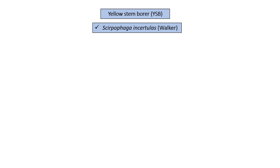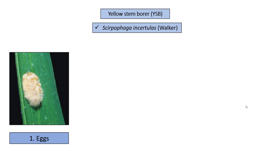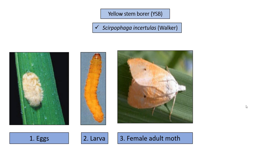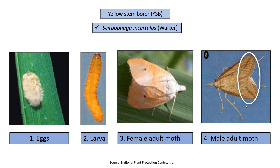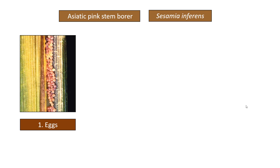Yellow stem borer: White, oval, flat eggs are laid in groups of 60 to 100 and covered with brownish hairs from the abdominal tuft on the upper surface of the leaf or near the tips of the leaf blade. Larva is creamy in color with a reddish-brown head. Female moths are yellow, with color deepening toward the tip, and have a very distinct black spot in the center of each forewing. Male moths are light brown with numerous small brownish dots along the sub-terminal area and near the tip of the forewing.